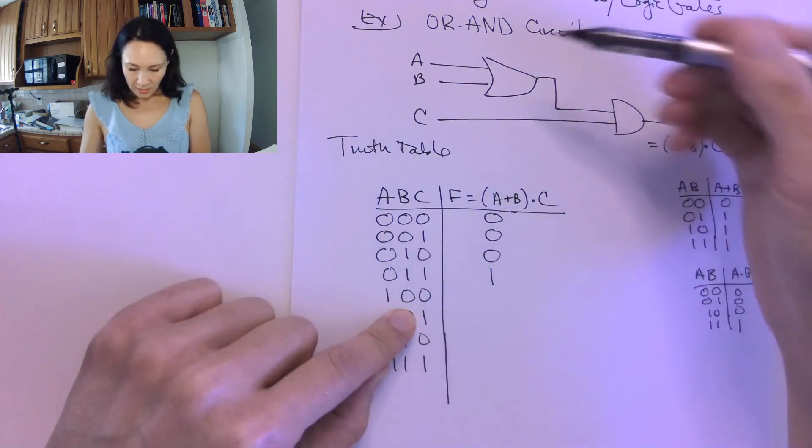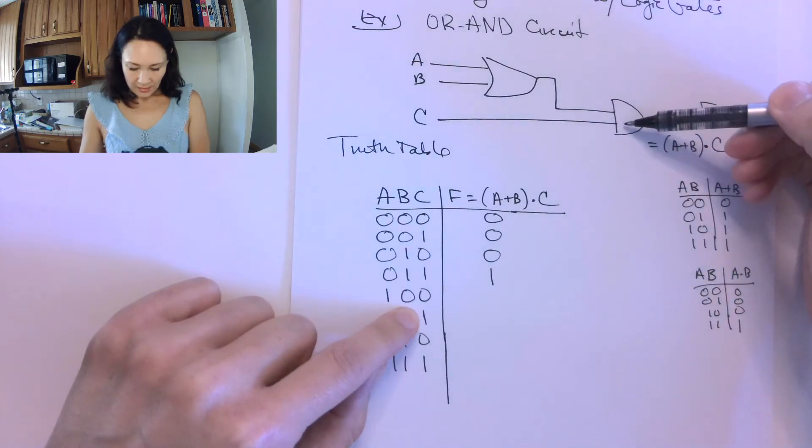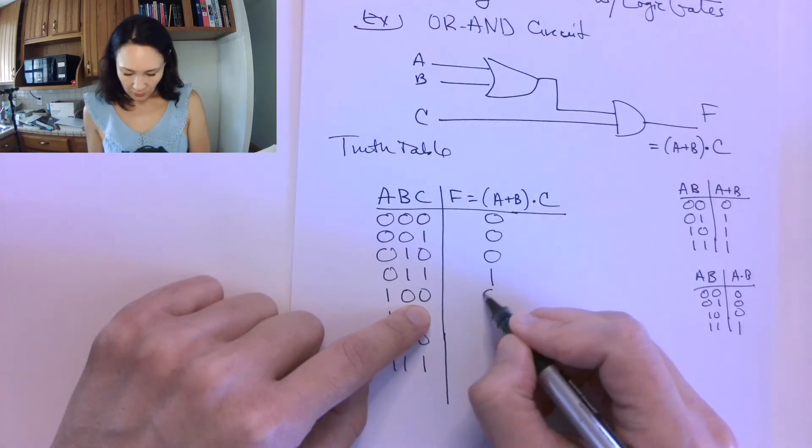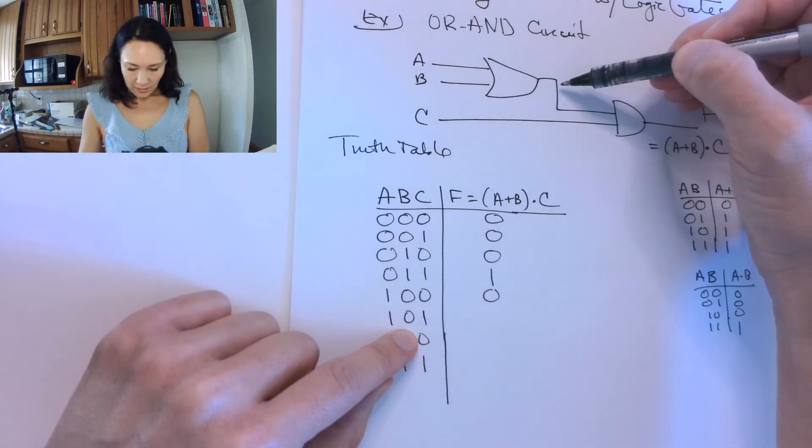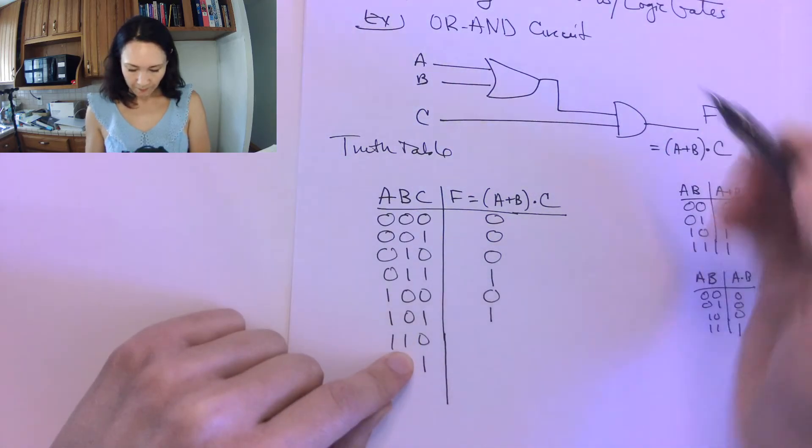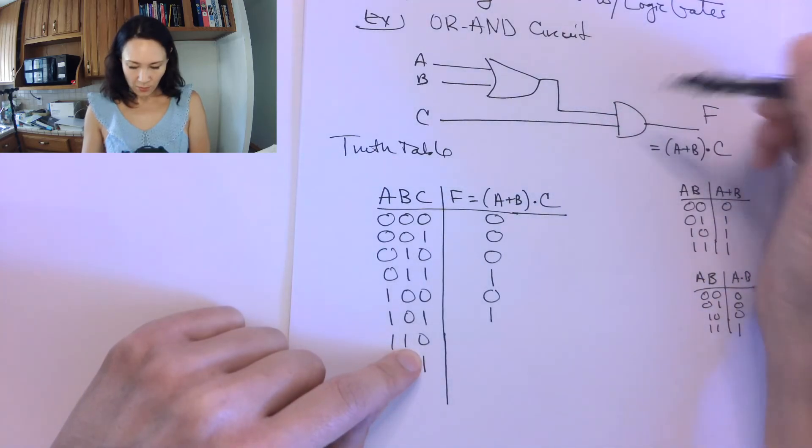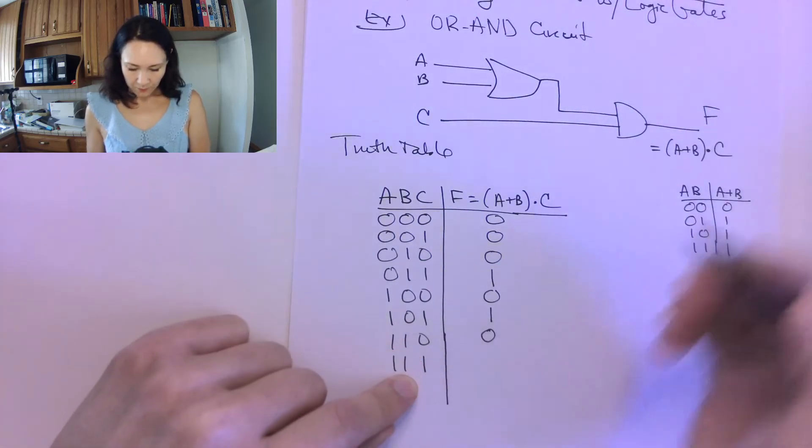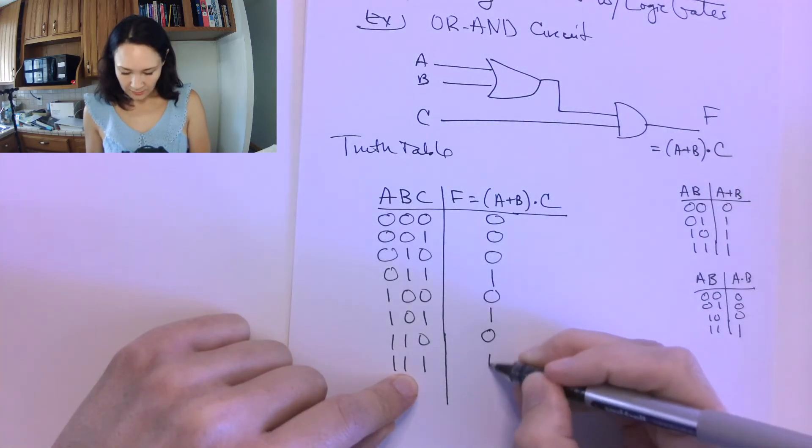Let's continue on. 1 or 0 is 1. That 1 gets ANDed with 0. So this is going to be 0. 1 and 0 is 1. That gets ANDed with 1. So the output will be a 1. 1 or 1 is 1 ANDed with 0. 1 or 1 is 1 ANDed with 1 is 1.